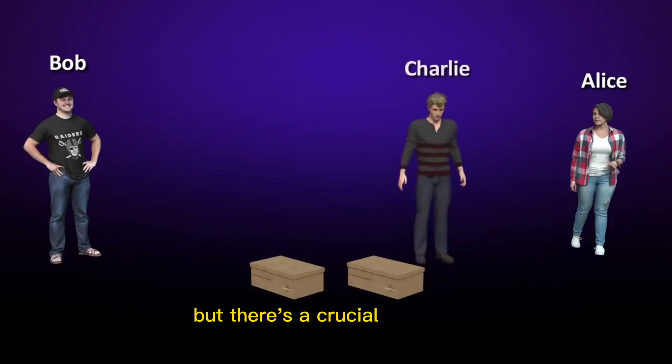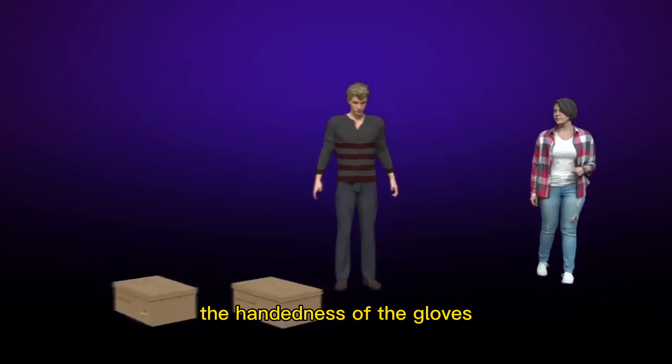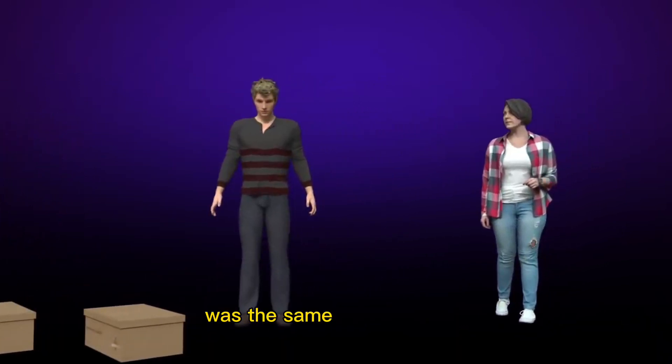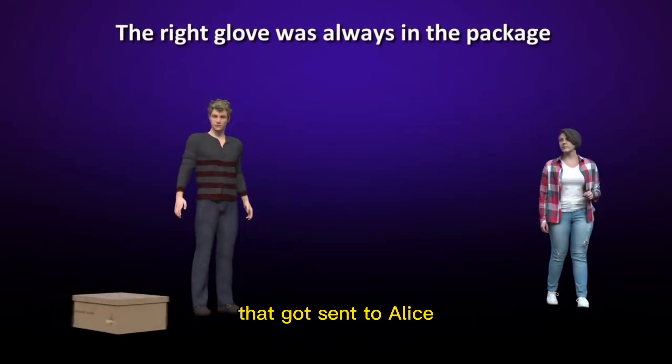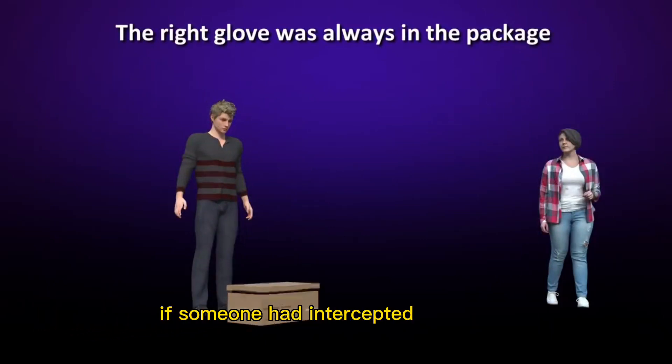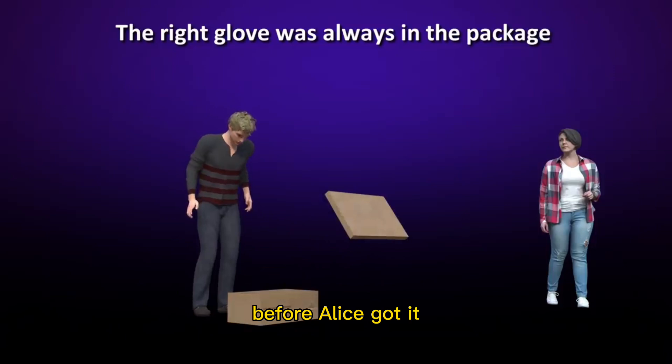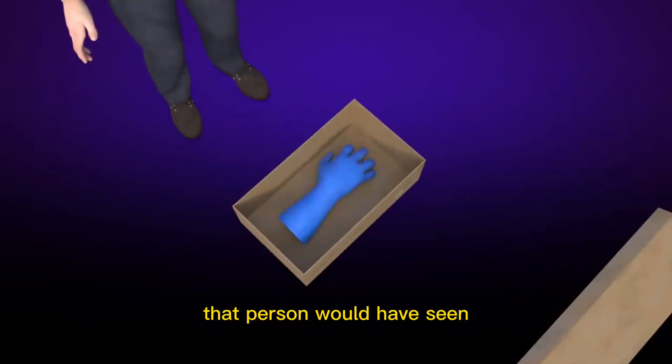But there is a crucial difference in this analogy. The handedness of the gloves in the package was the same from the start. It never changed. It was always the right hand glove that got sent to Alice. If someone had intercepted the parcel before Alice got it, that person would have seen that it was the right handed glove.